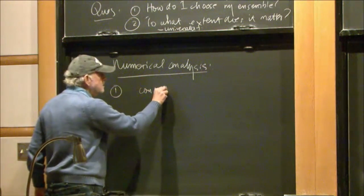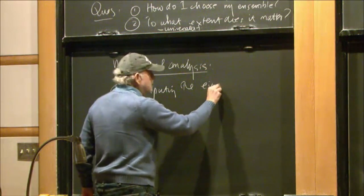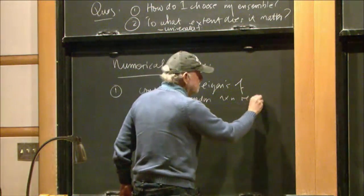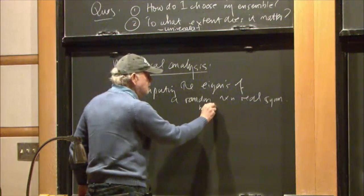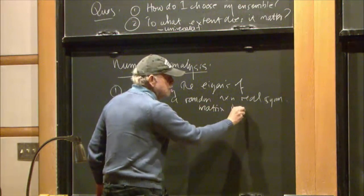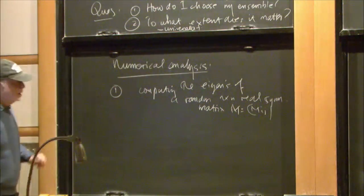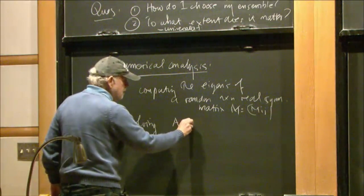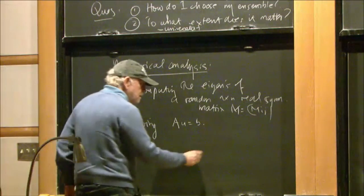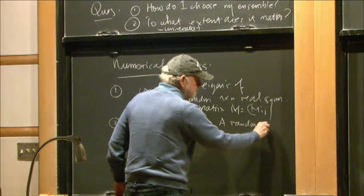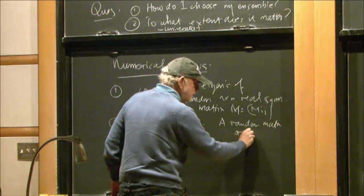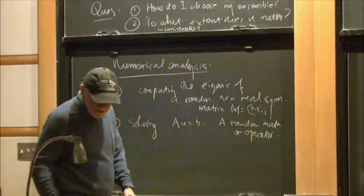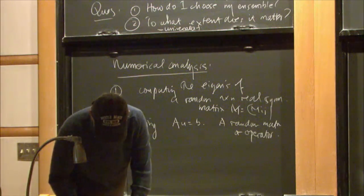Let me say right in the beginning that you won't see a single theorem. All of this is numerical computation. So I'm particularly going to focus on two problems. This is computing the eigenvalues of a random n by n real symmetric matrix. Typically, we write such matrices M with components MIJ. And secondly, solving basic linear algebra, which is AU equals B. A is a random matrix or operator.